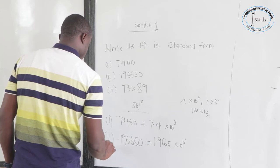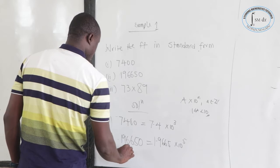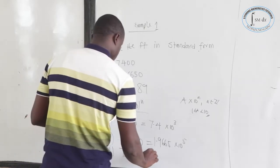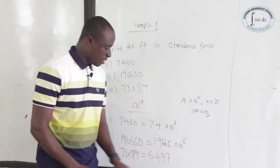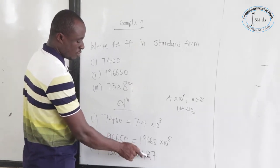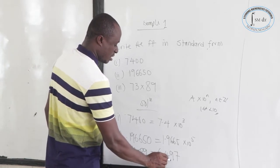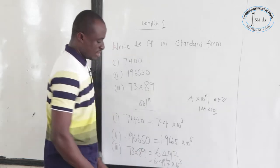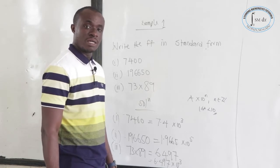Now let's see the third one. We have 73 times 89. That gives us 6,497. We want to write this in standard form. This is a whole number, so the point is at the last end. Moving 1, 2, 3 steps leftward, we get 6.497 times 10 to the power 3 — positive 3, because we moved leftward.